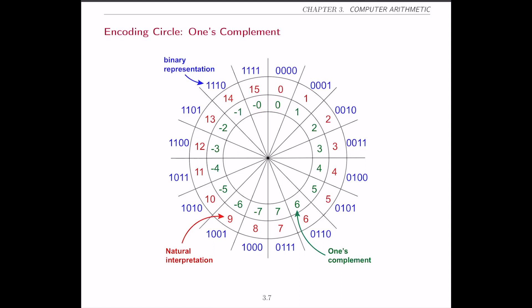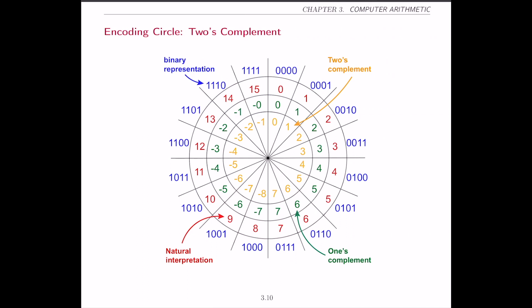One simple solution is to take all these numbers and shift them to the right by 1 — and that's really what 2's complement is all about. We are going to do some simple math, but if you understand this picture you have understood everything there is about 2's complement. These are the 2's complement interpretations of each binary number. The numbers that start with 0 still have the same value as the natural numbers.